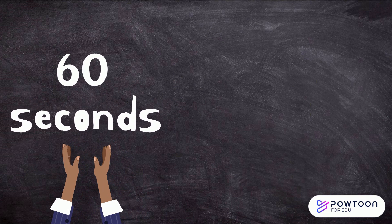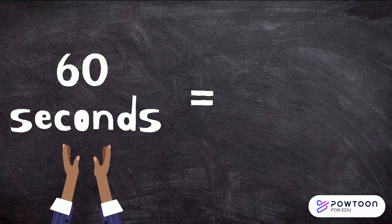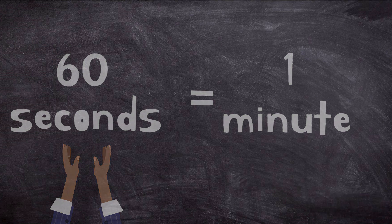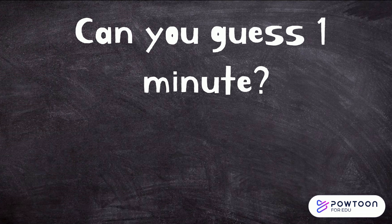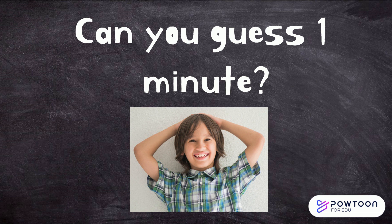There are 60 seconds in one minute. We are going to time one minute, and you have to count slowly to 60 in your head. Once you think 60 seconds, or one minute, has gone by, put your hands on your head.